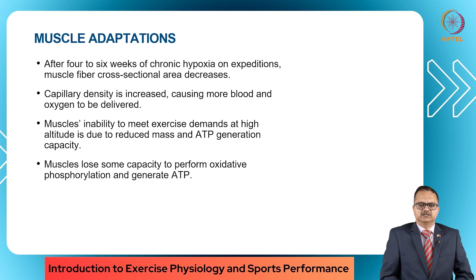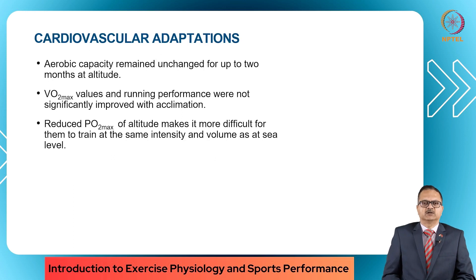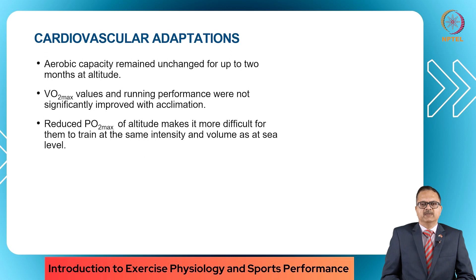Muscles lose some capacity to perform oxidative phosphorylation and generate ATP. Regarding cardiovascular adaptations, aerobic capacity remains unchanged for up to two months at altitude. VO2 max values and running performance were not significantly improved with acclimatization in several studies. Reduced PO2 at altitude makes it more difficult for athletes to train at the same intensity and volume as at sea level.